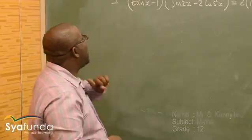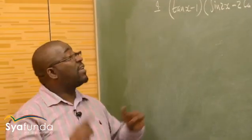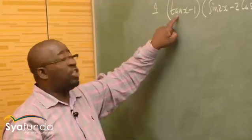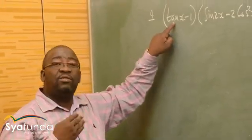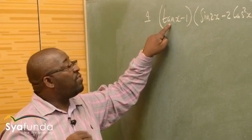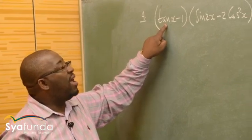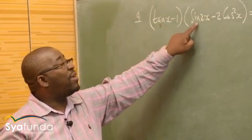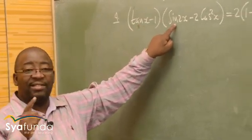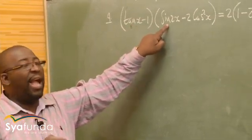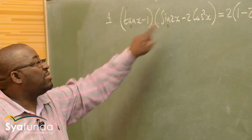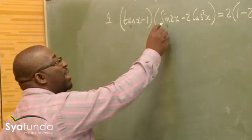I know for a fact that I've got to change this into sin x over cos x. When I look at this, it's a double angle — I know that this has to do with the double angle.